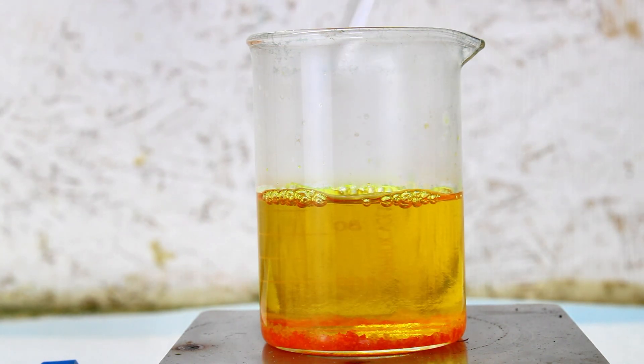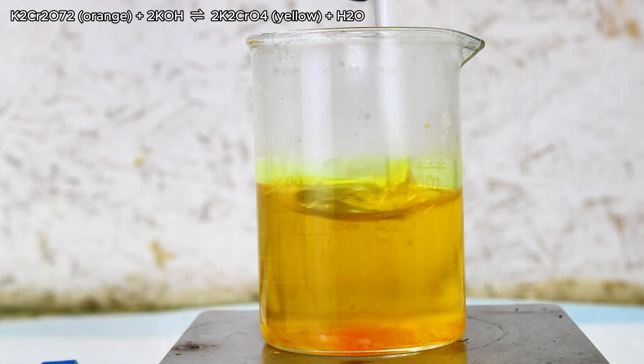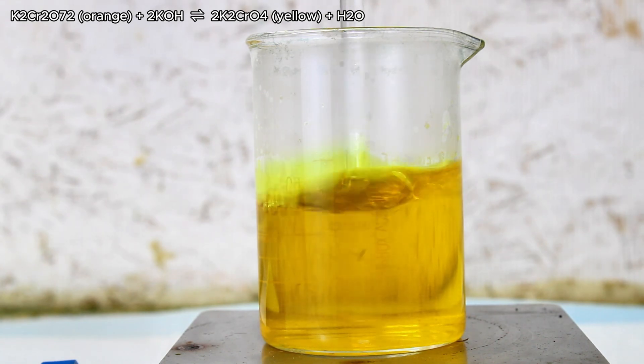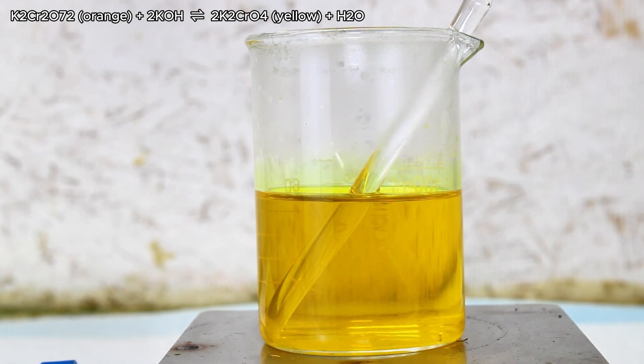For example here, if I wanted to convert this potassium dichromate to chromate, all I need to do is add a bit of potassium hydroxide until the solution goes from orange to yellow. This yellow color means that all the dichromate has been converted to chromate, which I could then crystallize out.